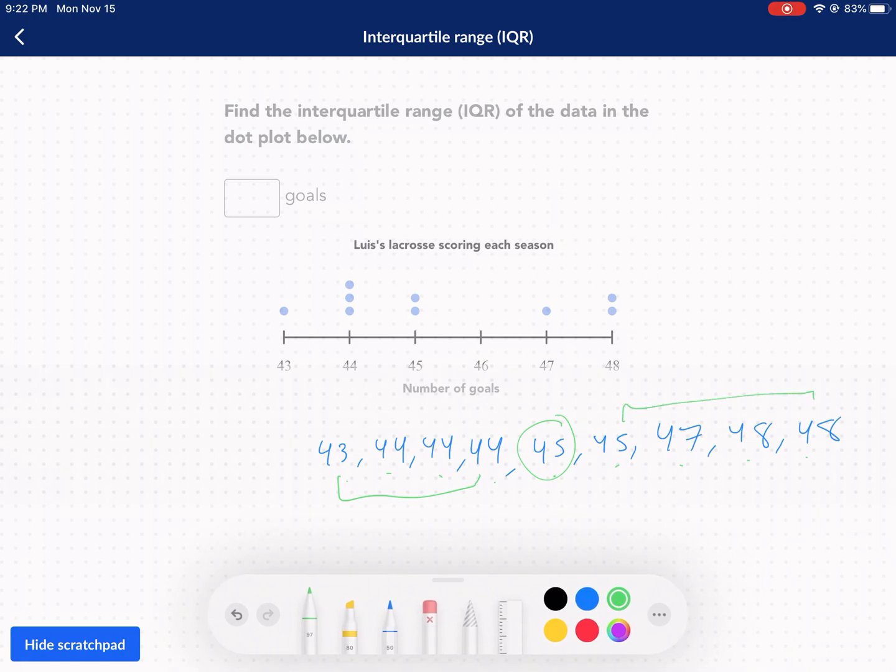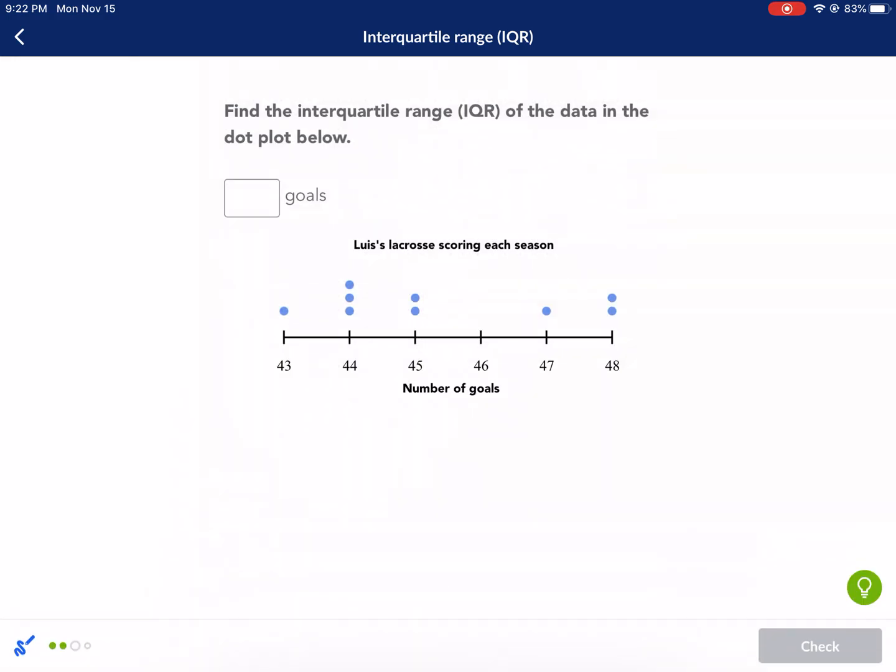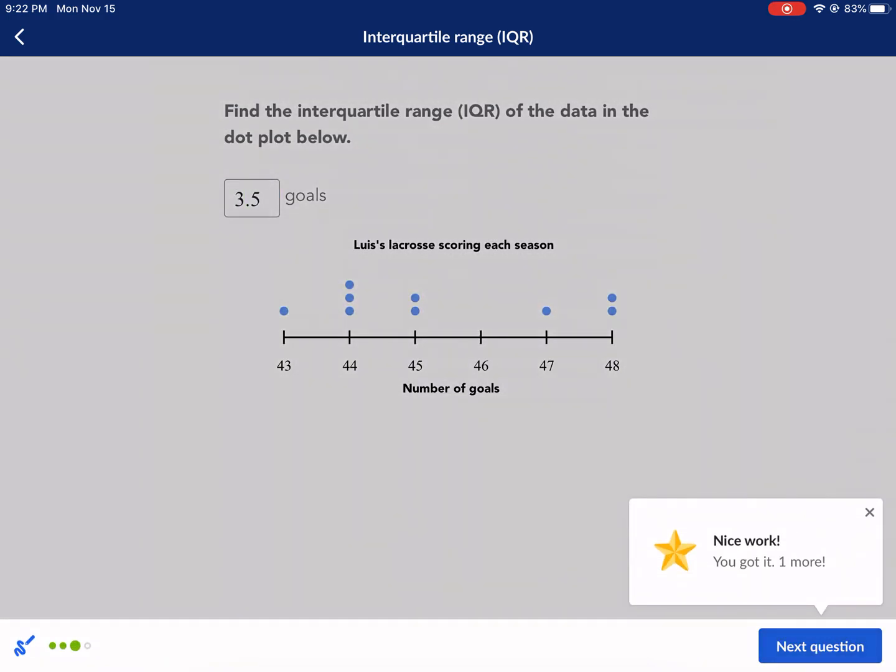Okay. So the median of the first half, I land on these two. So it's 44. Okay. And then I land on these two and that's going to be 47.5. So if I subtract 47.5, I'm going to get 3.5 for my interquartile range. 3.5. And there we go.